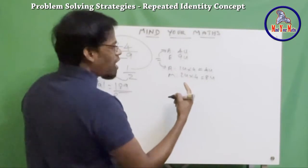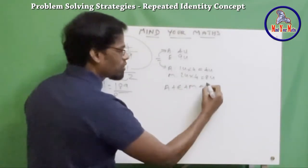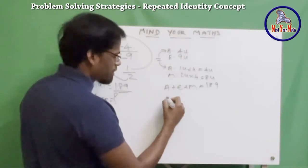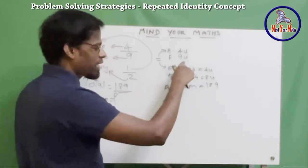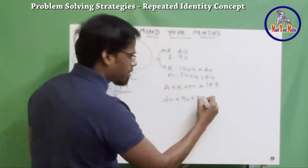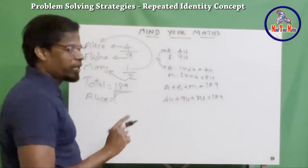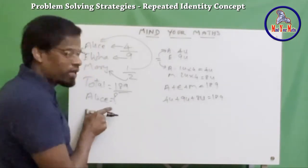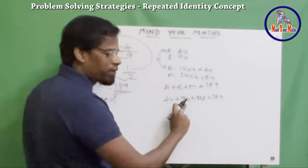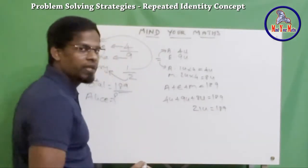Alice plus Alicia plus Mary equals 189. Alice has 4 units, Alicia has 9 units, and Mary has 8 units. Four plus nine is thirteen, plus eight is twenty-one. So 21 units equals 189. We need to find one unit's value to determine Alice's total marbles.